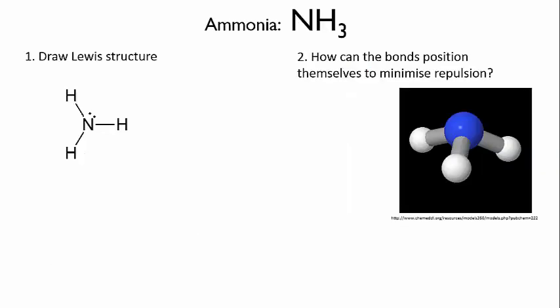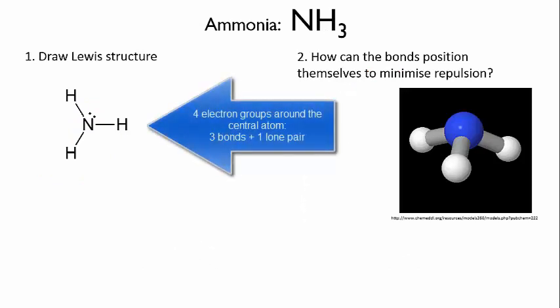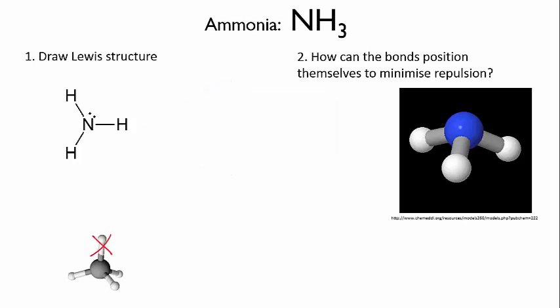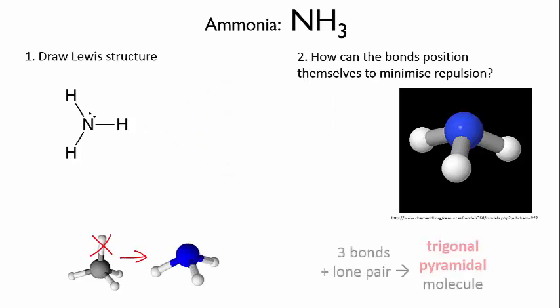So ammonia, with four electron groups around the central atom, is based on a tetrahedral geometry, but one of the groups is a lone pair, so it doesn't show up in the final molecular shape. Which leaves us with a sort of truncated tetrahedron, which we call a trigonal pyramidal molecule. And to draw that VSEPR structure, you use a wedge and a dash to show the 3D shape and the lone pair, so that you don't forget what's making it that shape in the first place.